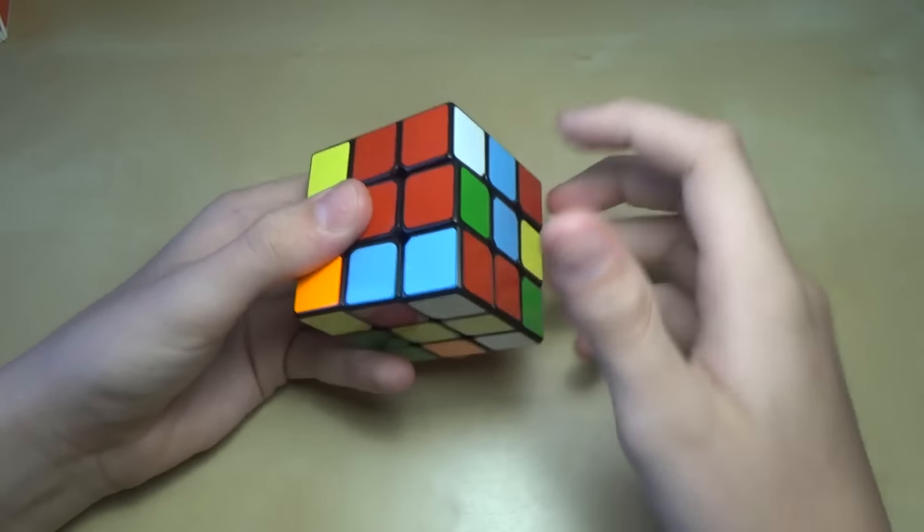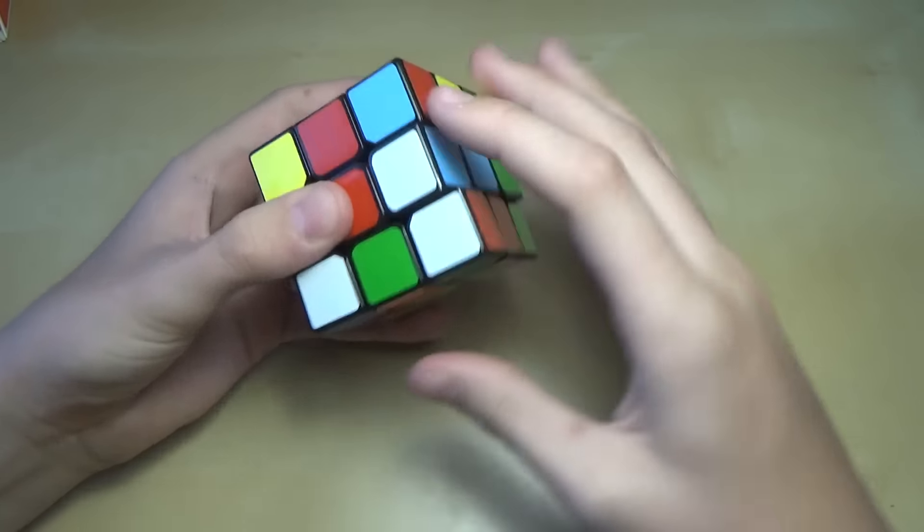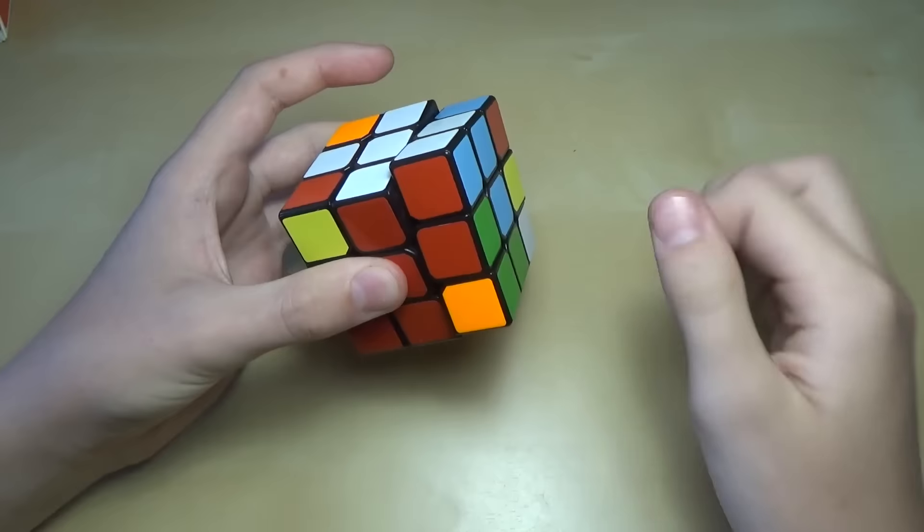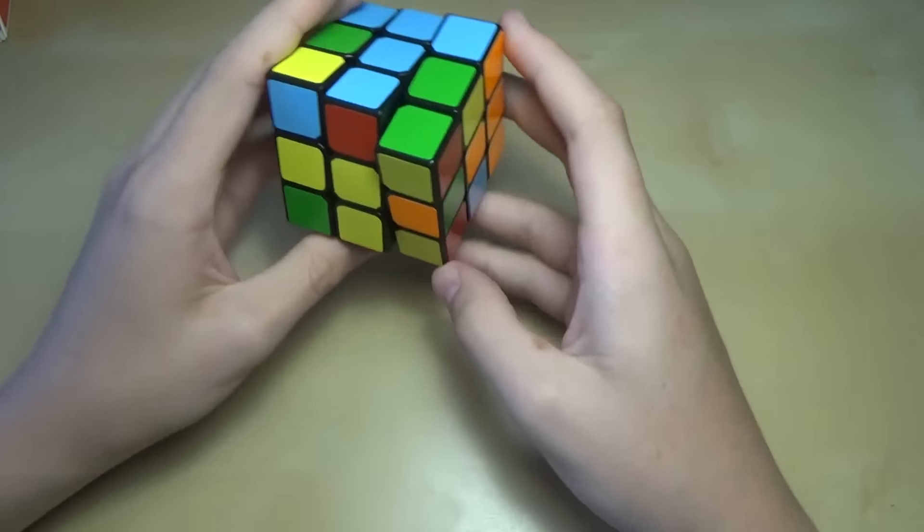Now you're going to line up the corners underneath the slot that they need to go into, and use r'u'rd until they are oriented correctly, like that. Repeat this with all the corners until they are all in, like that.